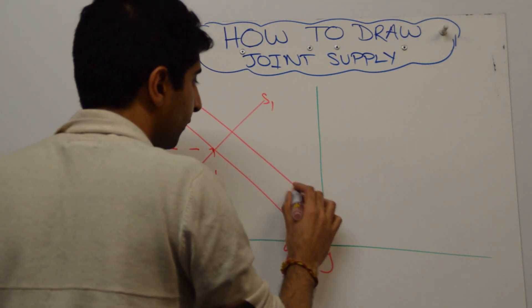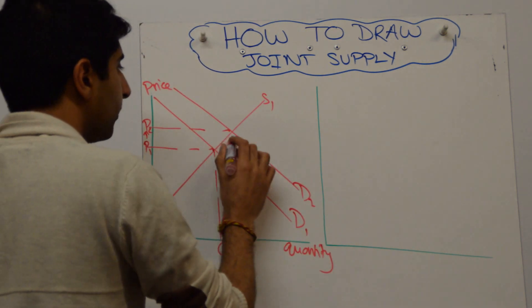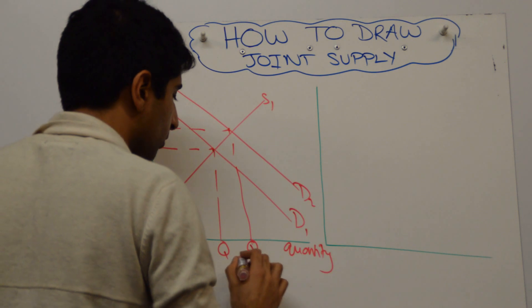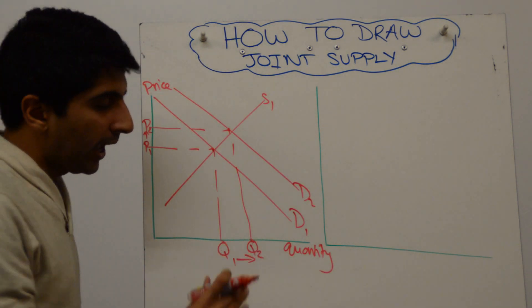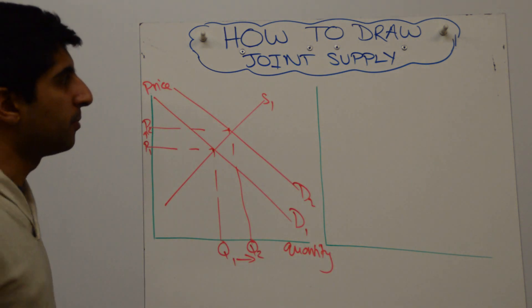Let's take an initial delivery of D1 and S1 with price P1 and quantity Q1. Let's now say that the demand for honey has gone up. That's going to lead to an increase in the price but also an increase in the production to ensure that Q2 units can be produced.